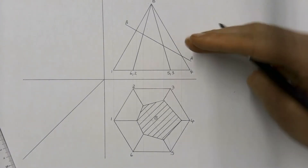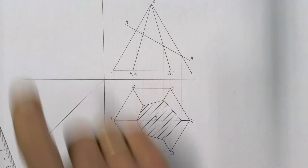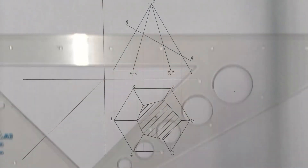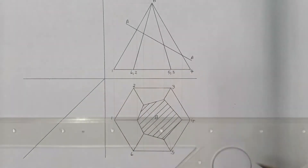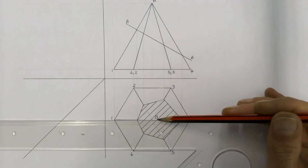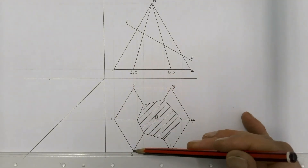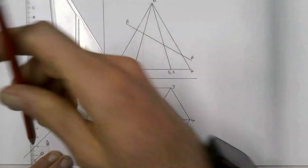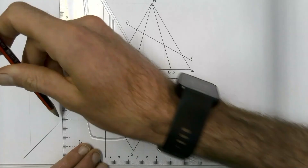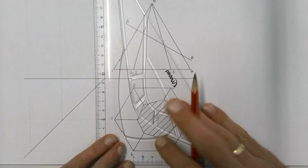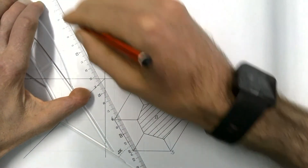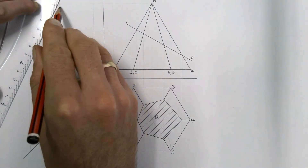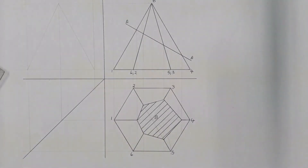Moving on to our sectional right view — because we're looking from the right and in first angle orthographic projection, our right view is projected onto the left hand side. We're going to take each of our points and project them across into our left view. Whenever we do a cutting in solid geometry, it's easiest to start by drawing the right view as if it wasn't cut first, then label it, and then cut it. So I'll project everything across and draw the right view without cutting it first.